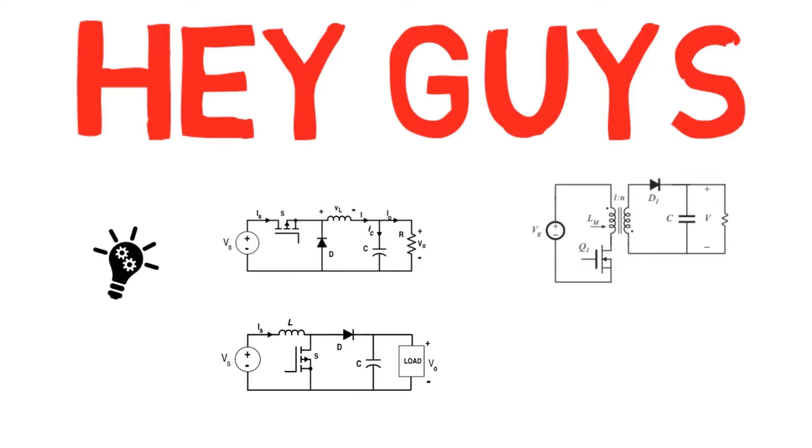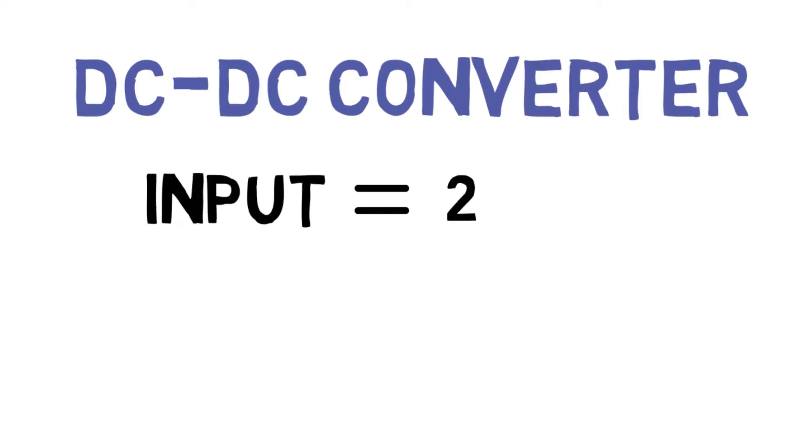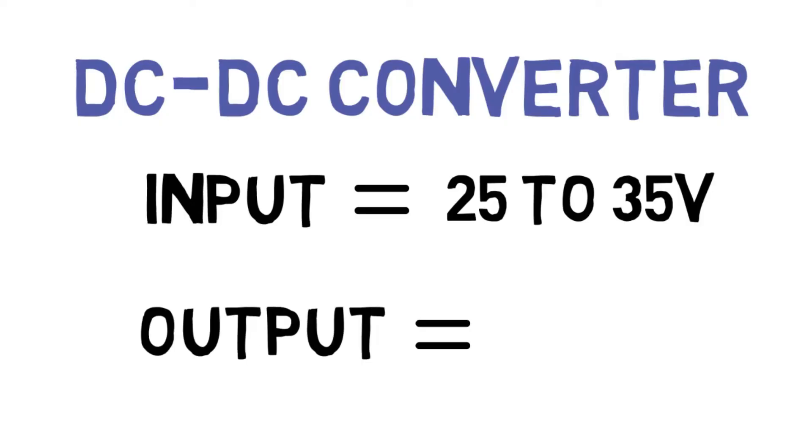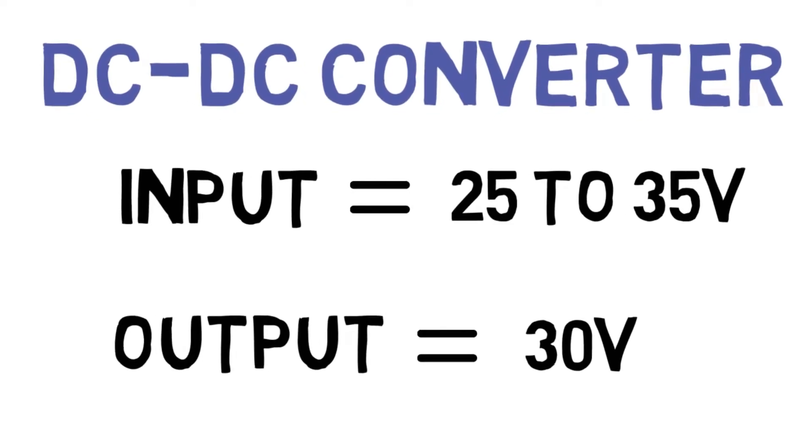Now let's take an example. What if we have to design a DC to DC converter where we have input voltage in the range of 25 to 35 volts and output voltage should be constant, which is 30 volts? For this configuration, we need a converter which will step up the input voltage and also step it down as the voltage exceeds.